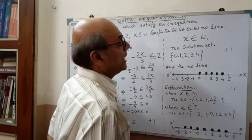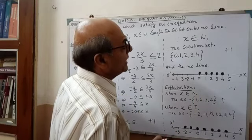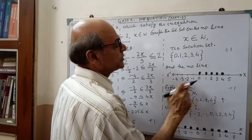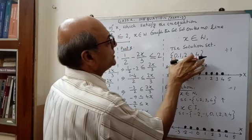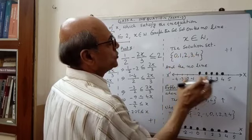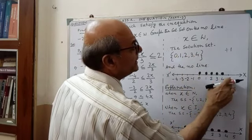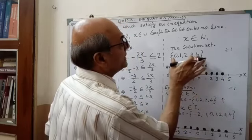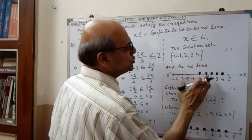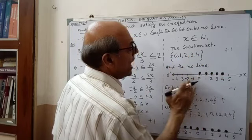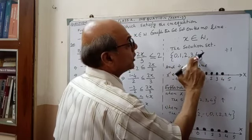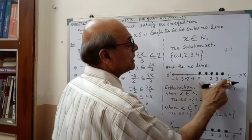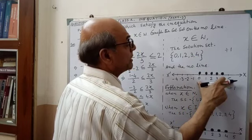One thing I missed to tell in the previous class — this is a vital part. Please pay attention. The required solution is 0 to 4, but on the number line I have shown 5 and more on the other side. You must remember: whatever required solution you got, on either side you have to show at least one more value. Since we got 4, we have to show at least 5. If you miss this, then marks for the number line you will miss.